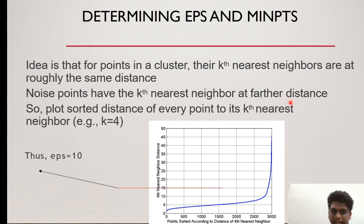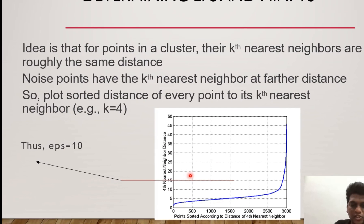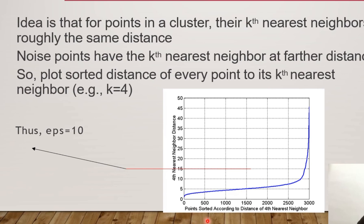To determine the maximum radius and the minimum points, the k-th nearest neighborhood distances should be at the same distance, and noise points should be as far as possible from the neighbors. For example, with k equal to 4, the distance of every point should be greater than that. A graph is plotted based on points sorted by the distance to the 4th nearest neighborhood. The EPS value is defined as 10.